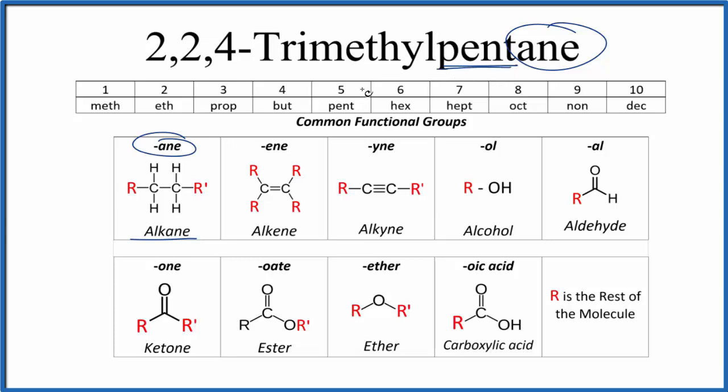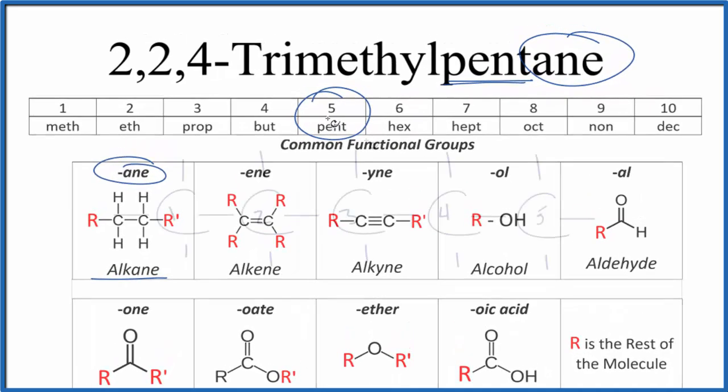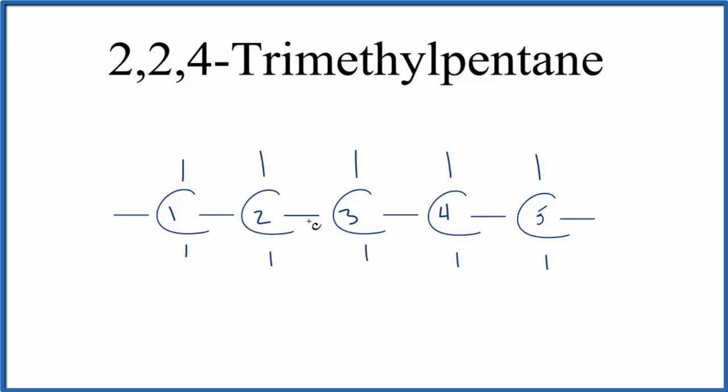Next, pent. Pent means five, so we're going to have five carbons single bonded in a row. Let's put those up and number them. Right now we have five carbons in a row. These lines here all go to hydrogens. That makes this just pentane.